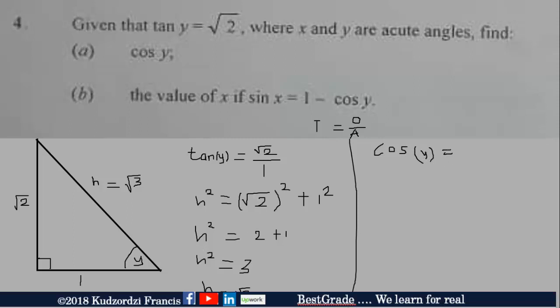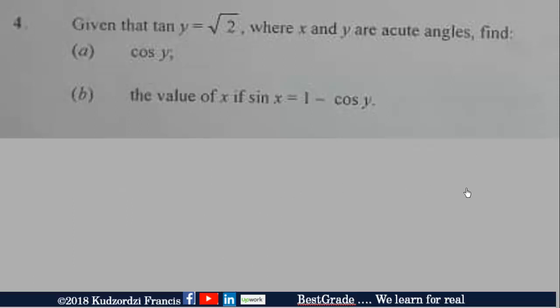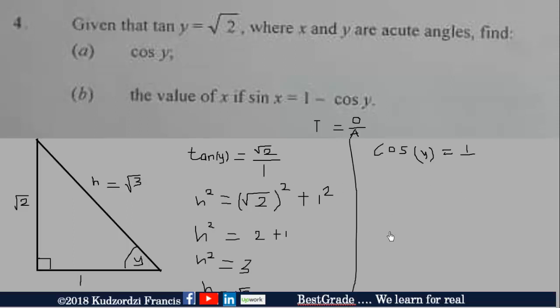The adjacent, which is 1, over the hypotenuse, which is √3. And don't forget to rationalize to get √3 over 3.